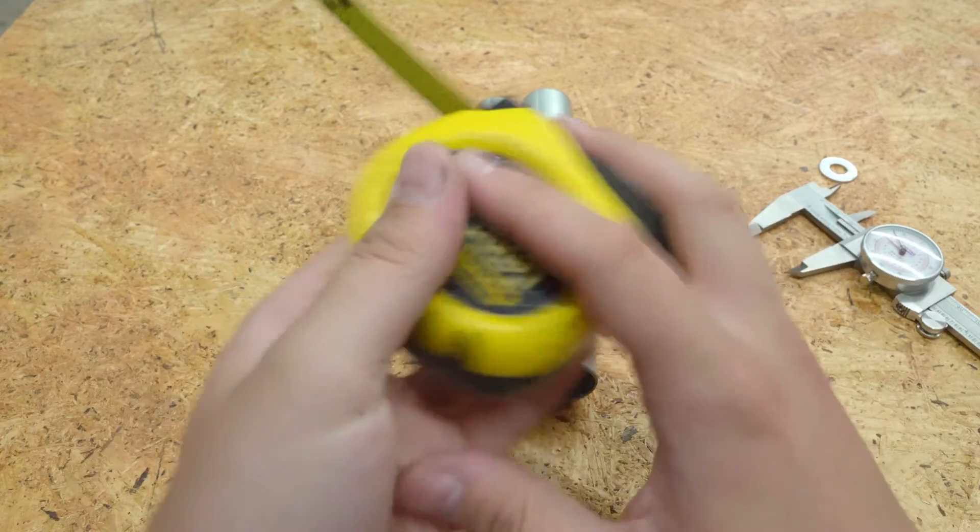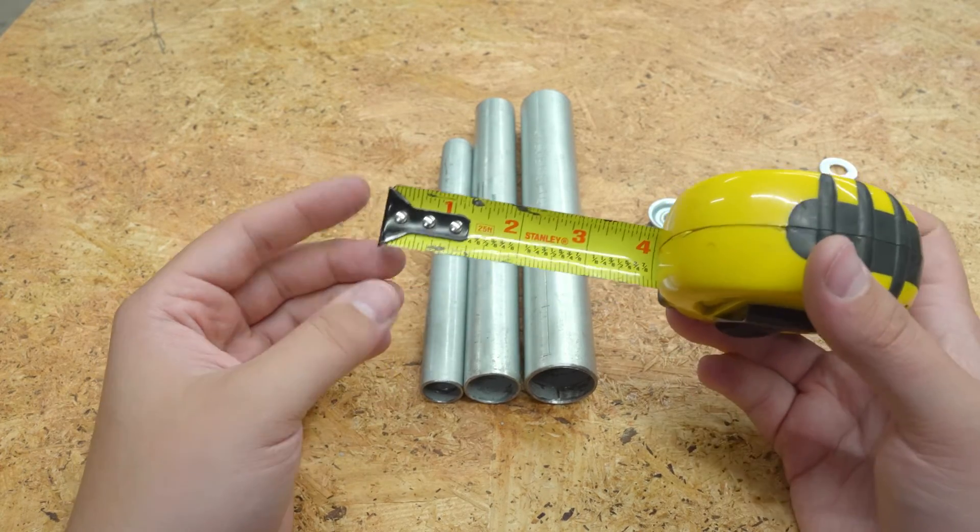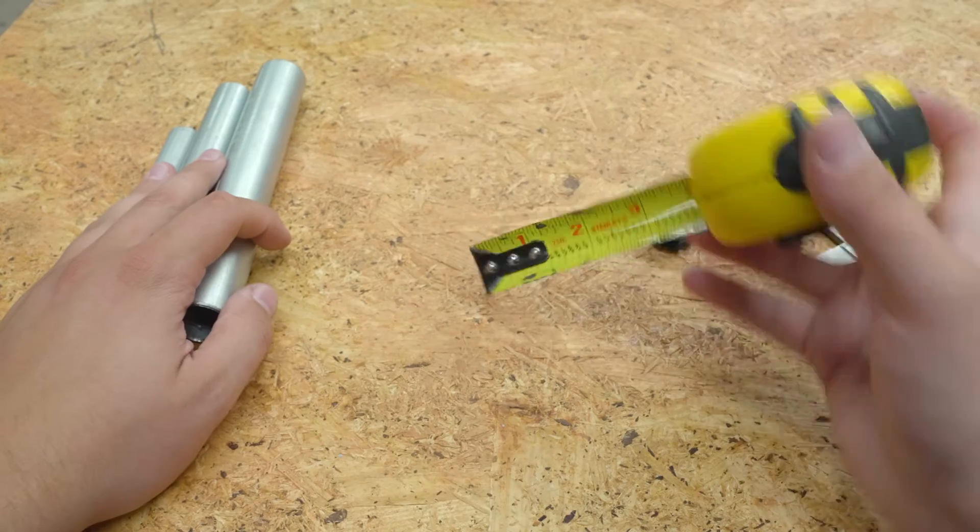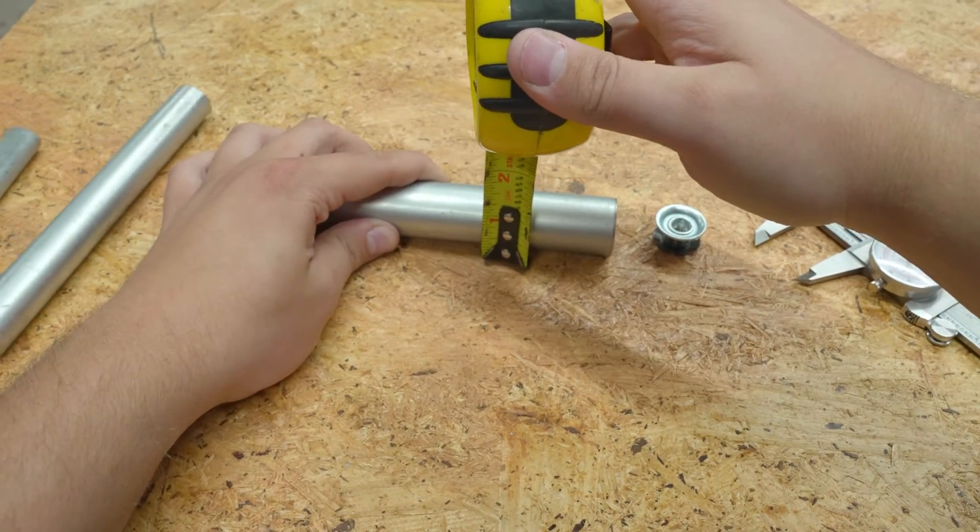But you can use just a regular tape measure, even a ruler, something like that, that you have handy to find the measurements. And the easiest way is if you have a flat surface, put the tape measure against that flat surface, and then measure the pipe that way.